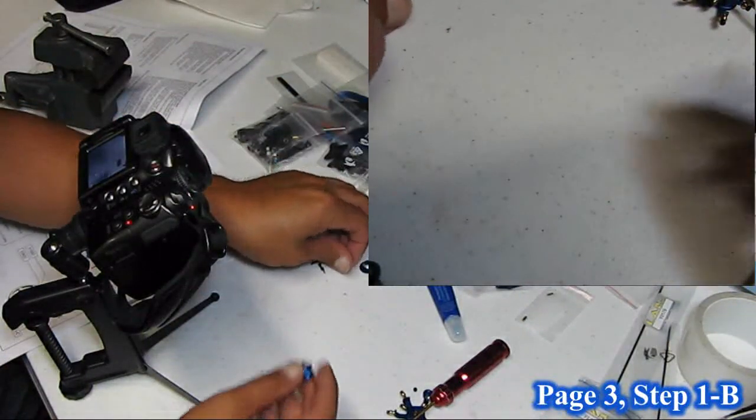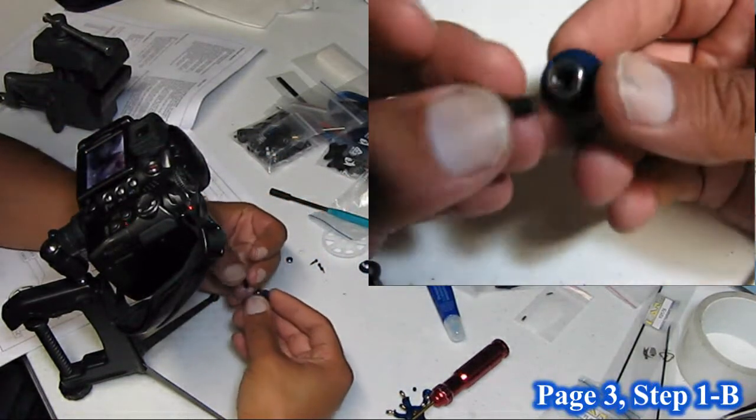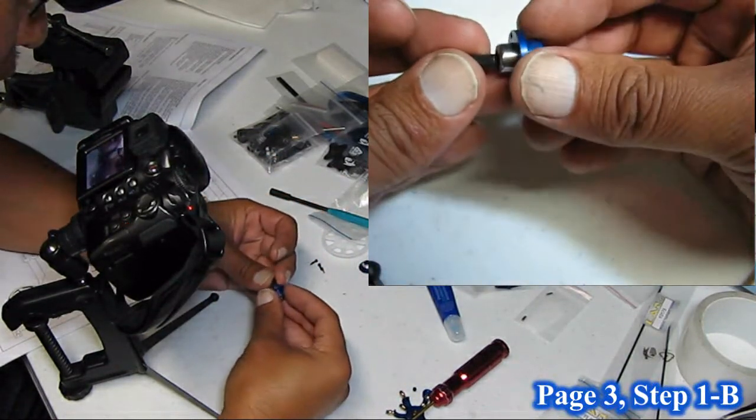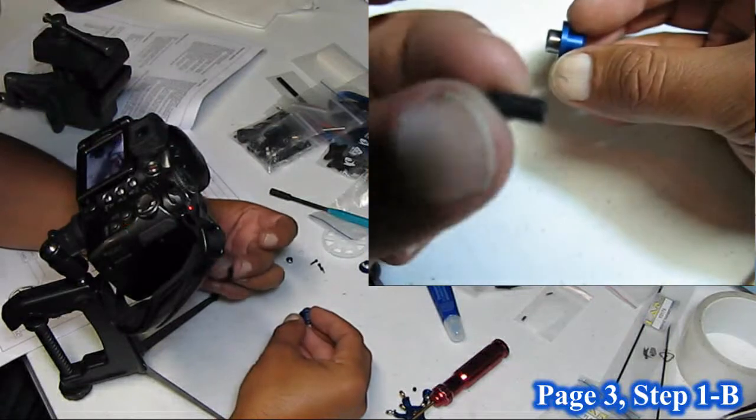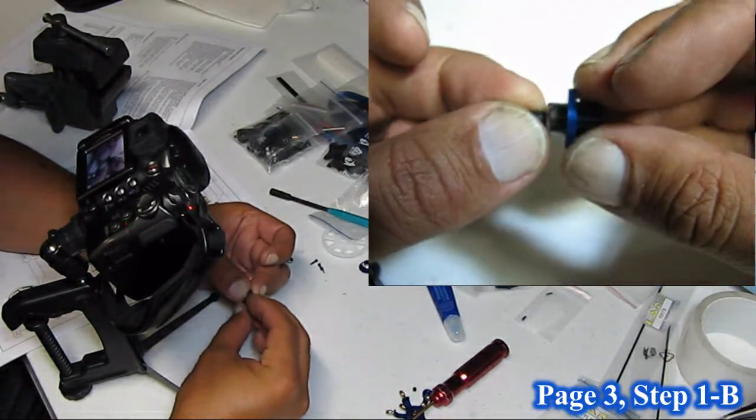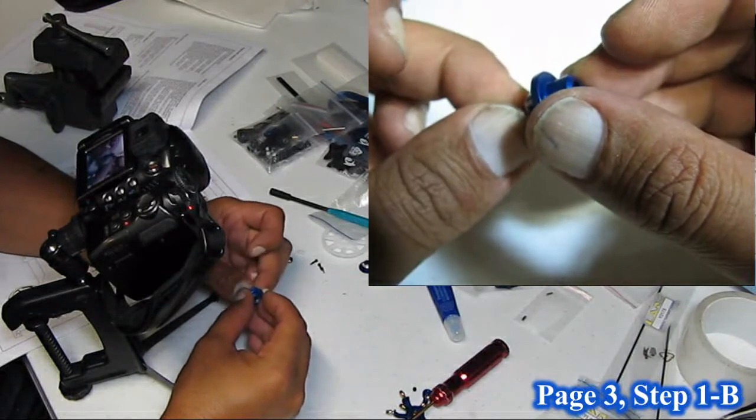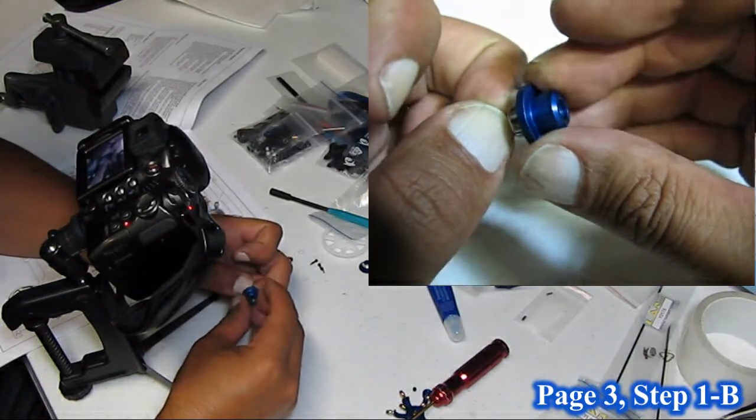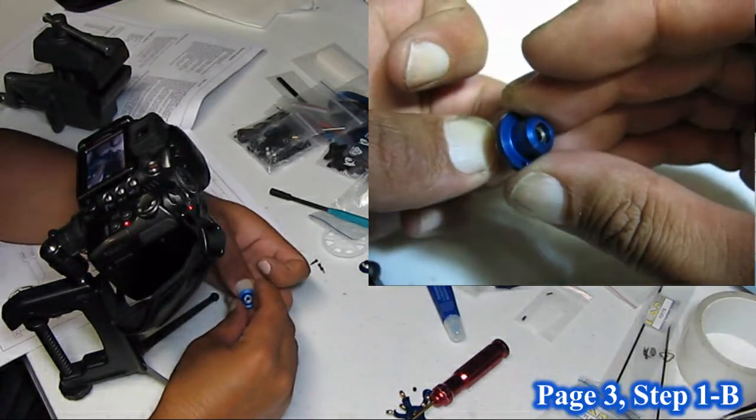You can also check the direction of the one-way without fully assembling everything. This is the one-way lock sleeve. You can actually take that, insert it into the bearing, and make sure that the freewheel direction is the correct direction. Which it is.